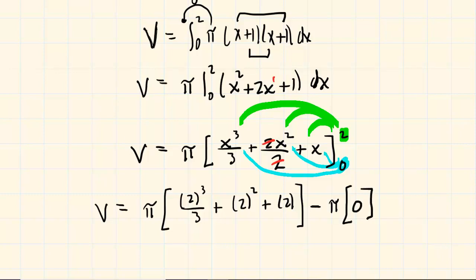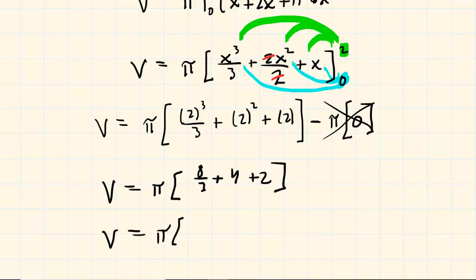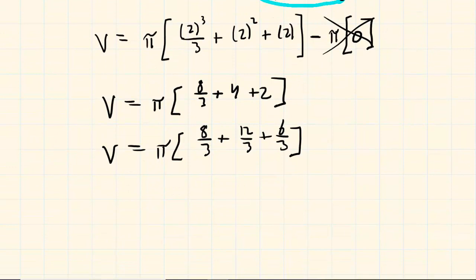So now the rest of the problem is just algebraically simplifying it here. We're going to have 8 thirds plus 4 plus 2. Let's get a common denominator here. So you'll have 8 thirds plus 12 thirds plus 6 thirds. And then when you add up all the numerators, you're going to end up with 26 thirds. So your final volume will be 26 thirds pi. And this will be the correct answer.